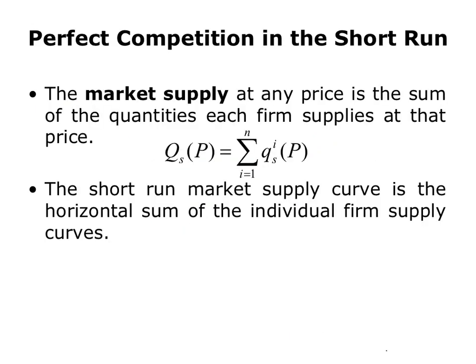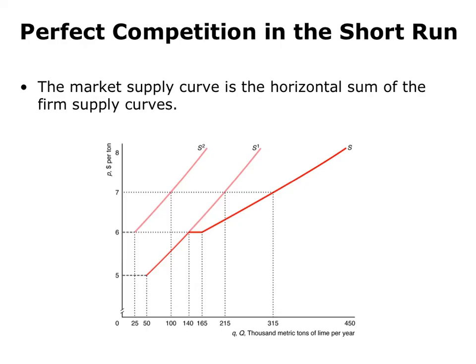To get supply for the entire market, we add up the quantity supplied by each firm. The short-run market supply is the horizontal sum of the individual firm's supply curves. Here's a simple example with only two firms. S1 is the supply for firm 1 and S2 the supply for firm 2. To derive the market supply, we're going to horizontally sum S1 and S2. Horizontal summation means at every price, we sum the quantity supplied by firm 1 and the quantity supplied by firm 2 — at every price, we sum the quantities of all firms.